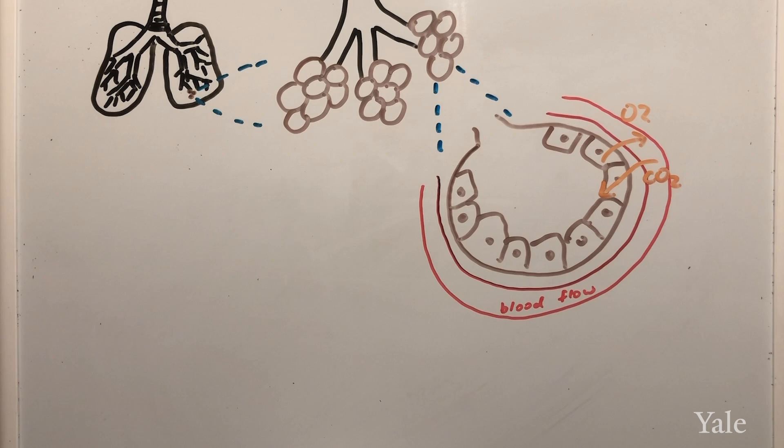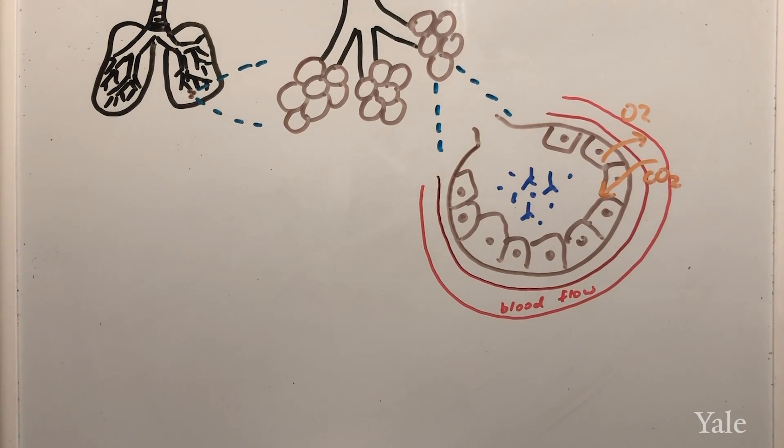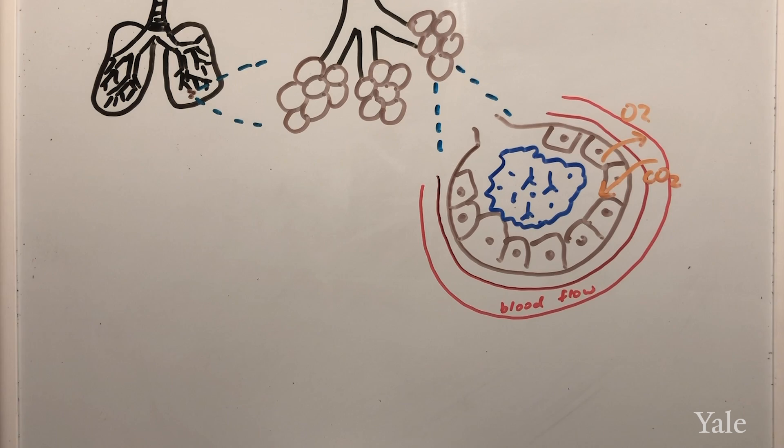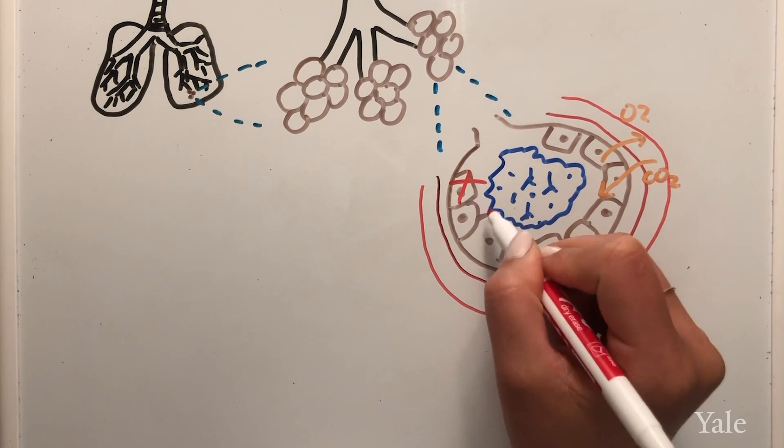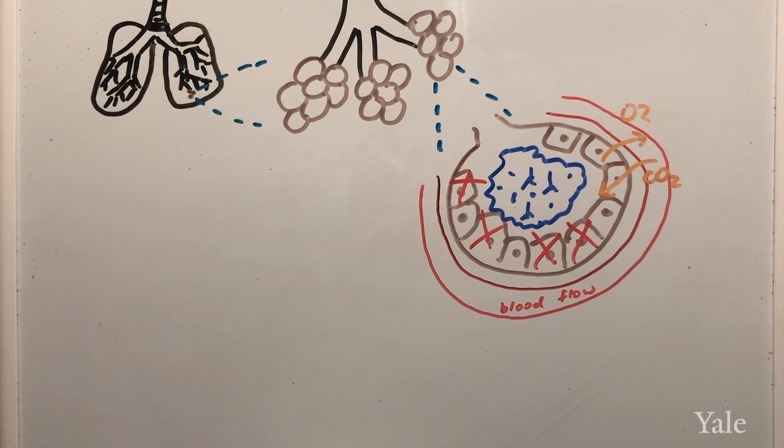The virus attacks the cells in the alveoli and when the body detects the virus, it signals an immune response to go into overdrive. Immune cells are sent to the alveoli which cause them to swell and fill with fluid. The overactive immune response can damage more alveolar cells causing more cells to die and slough off, filling the lungs with more debris and fluid.